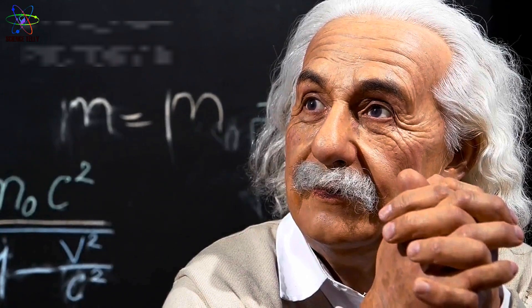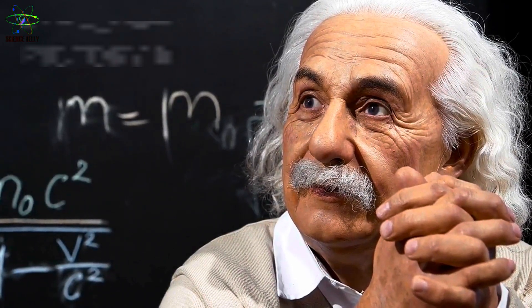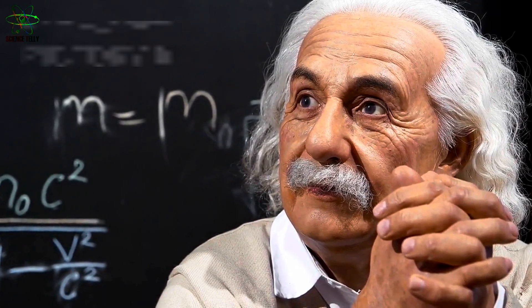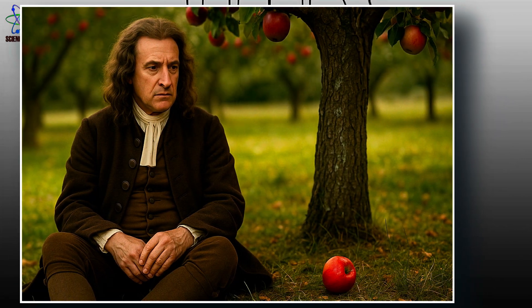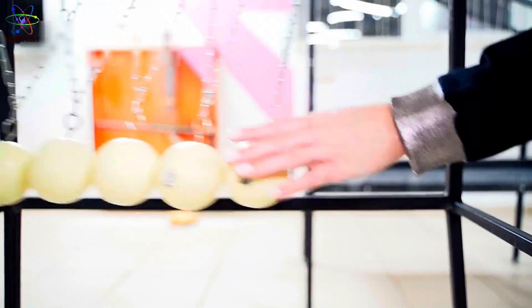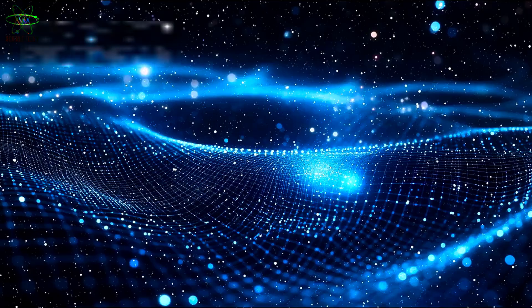Let's rewind to the early 1900s, where a rebellious physicist named Albert Einstein was quietly blowing up everything we thought we knew about space, time, and gravity. Before Einstein, we had Newton's version of gravity. Apples fall, planets orbit, because there's an invisible force pulling everything toward everything else. That idea worked for centuries. But Einstein looked at it and said, Nope, that's not quite right.